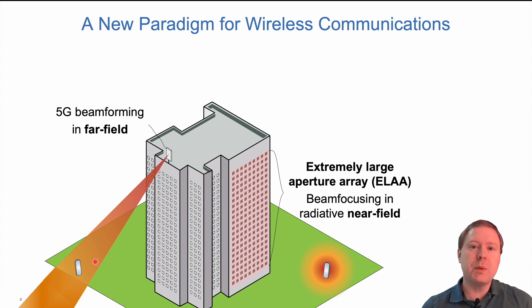However, if we would in the future build arrays that are much larger, maybe spanning the entire facade of a building, we can call them extremely large aperture arrays because the aperture, the total length of the array, is very large. Then we can focus signals in different ways, for example, like a ball of strong signal power around the receiver.